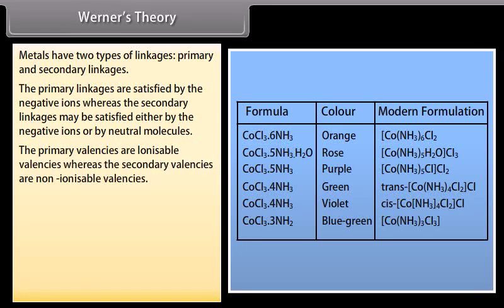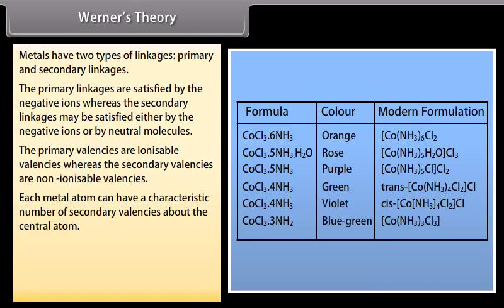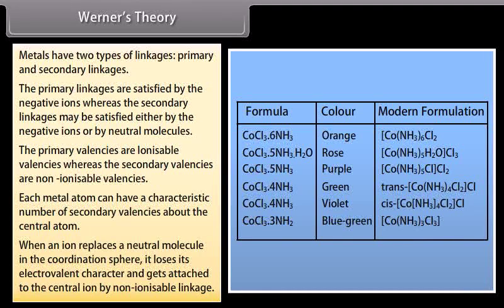The primary valencies are ionizable valencies, whereas the secondary valencies are non-ionizable valencies. Each metal atom can have a characteristic number of secondary valencies projected in space about the central atom, assigning a definite geometry to the coordination compound. Not only neutral molecules but ions may also be coordinated to the central atom. When an ion replaces a neutral molecule in the coordination sphere, it loses its electrovalent character and gets attached to the central ion by a non-ionizable linkage.